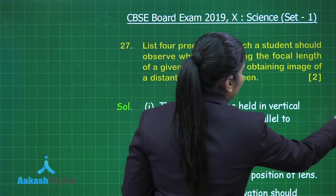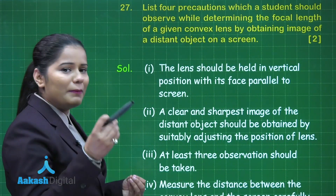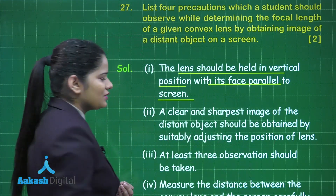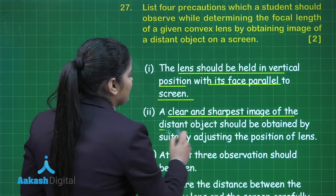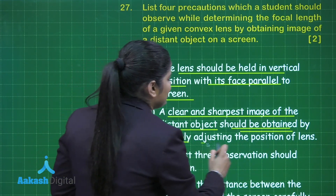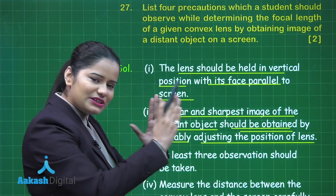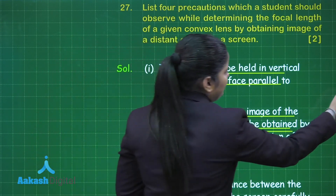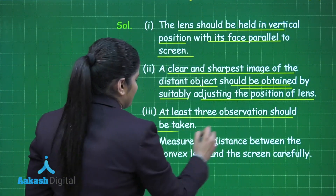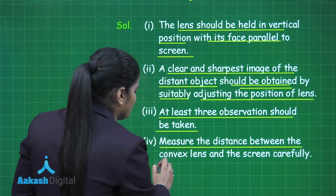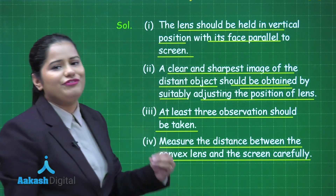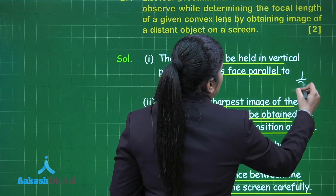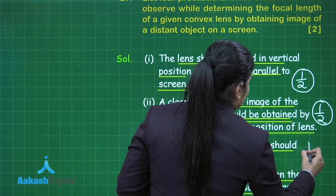The four precautions are: first, the lens should be held in a vertical position with its face parallel to the screen. Second, a clear and the sharpest image of the distant object should be obtained by suitably adjusting the position of the lens. Third, the student should take at least three observations. Fourth, the student should measure the distance between the convex lens and the screen very carefully. You get half a mark for each precaution.